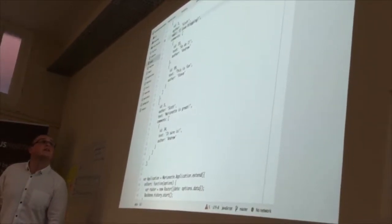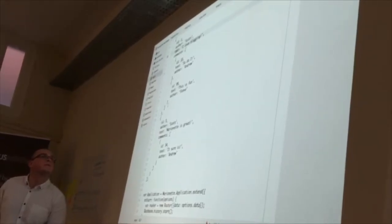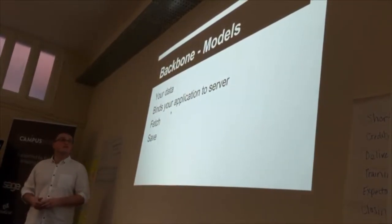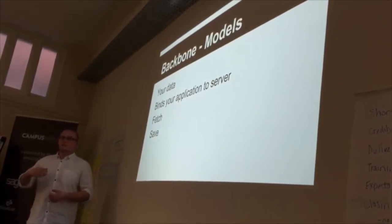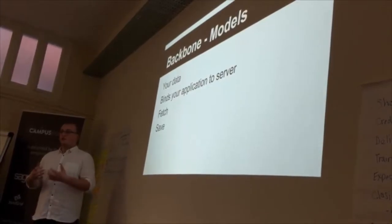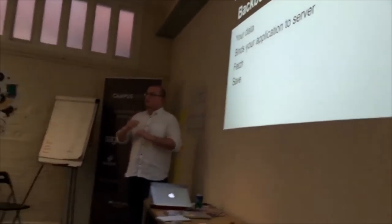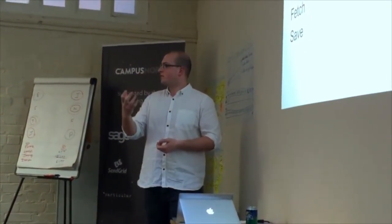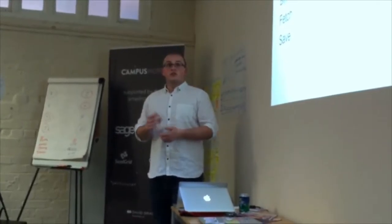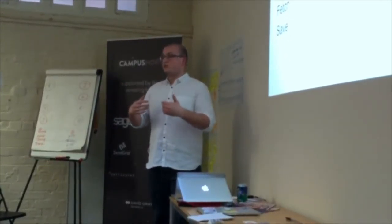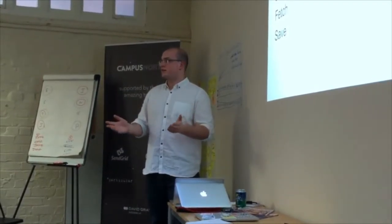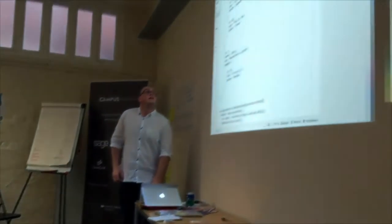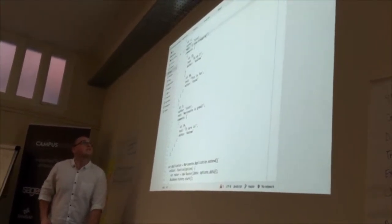That takes us into models. Models are the actual individual items of data - they bind your application to the server data. You can call the fetch method to pull data, or the save method to synchronize data you've input with the server. Models are quite clever - they understand whether you should save a new item or update an existing one, based on whether they have an ID field from the server. If you've created a new one it'll get an ID field; if you pulled it from the server it knows to just update back.